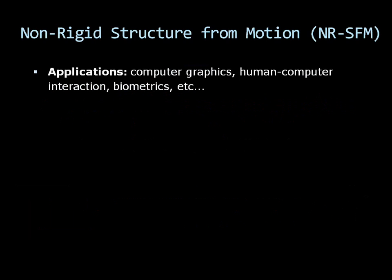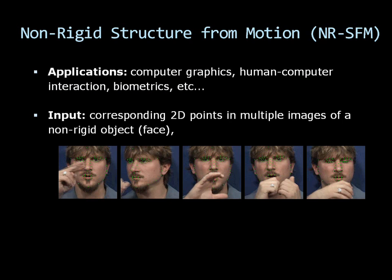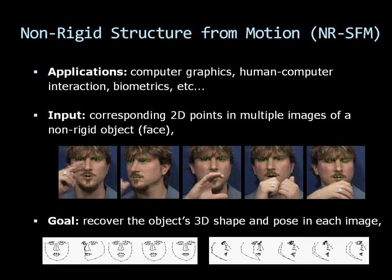Non-rigid structure from motion is a challenging problem in computer vision, with important applications found in computer graphics, human-computer interaction, and biometrics. Given corresponding 2D points in multiple images of a non-rigid object, the goal is to recover the object's 3D shape and pose in each image.